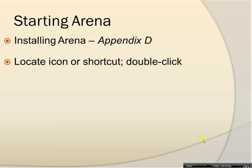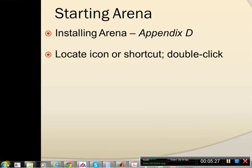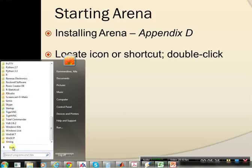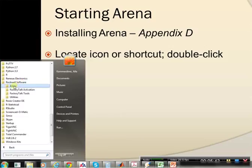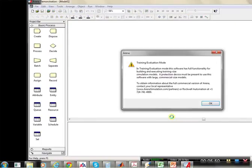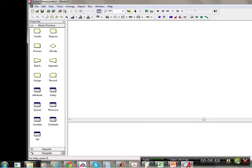When you've installed ARENA you can start running it just like any Windows application — find it on your desktop and double-click the shortcut. To demonstrate: I click the Start button in Windows, go to All Programs, then Rockwell Software, then ARENA, and it starts. It says it's a training license — a student license — so let's go ahead and start working with ARENA.